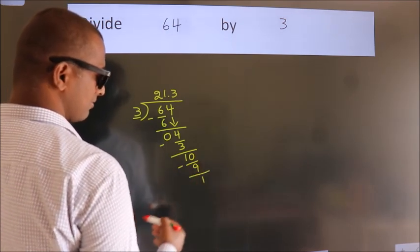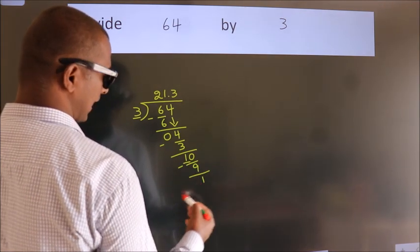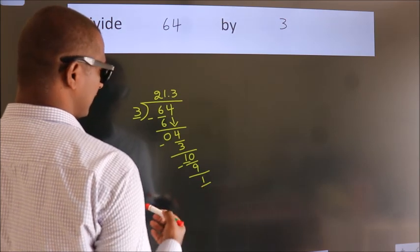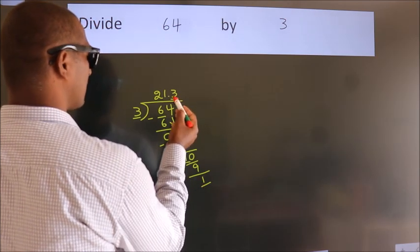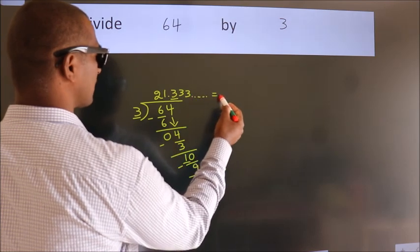Now you observe. We had 1 here and we got 1 again. That means this number keeps on repeating. So this is our quotient.